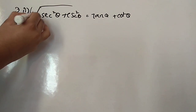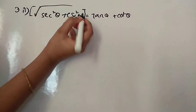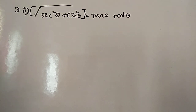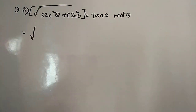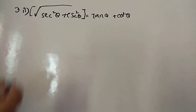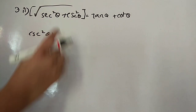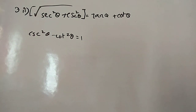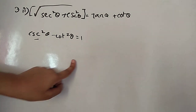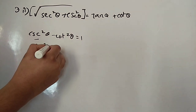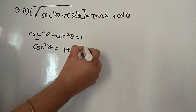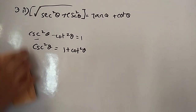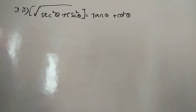We will start by considering the LHS part of the question. Cosecant squared theta can be written as 1 plus cot squared theta. This comes from the identity: cosecant squared theta minus cot squared theta equals 1. So cosecant squared theta equals 1 plus cot squared theta.